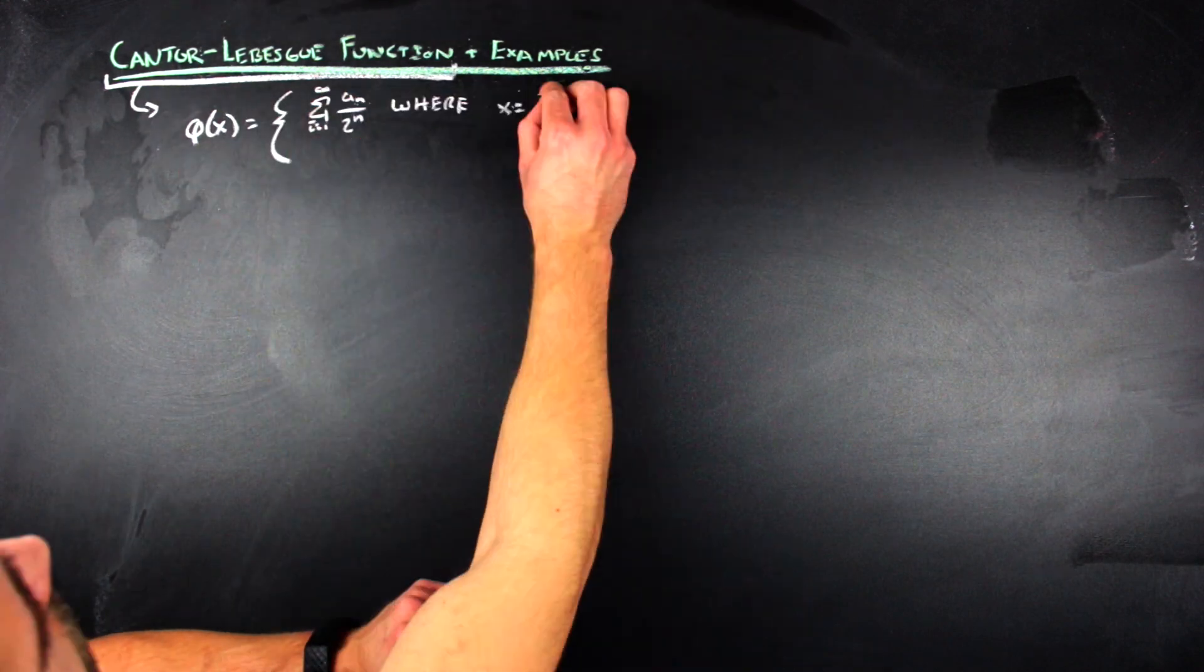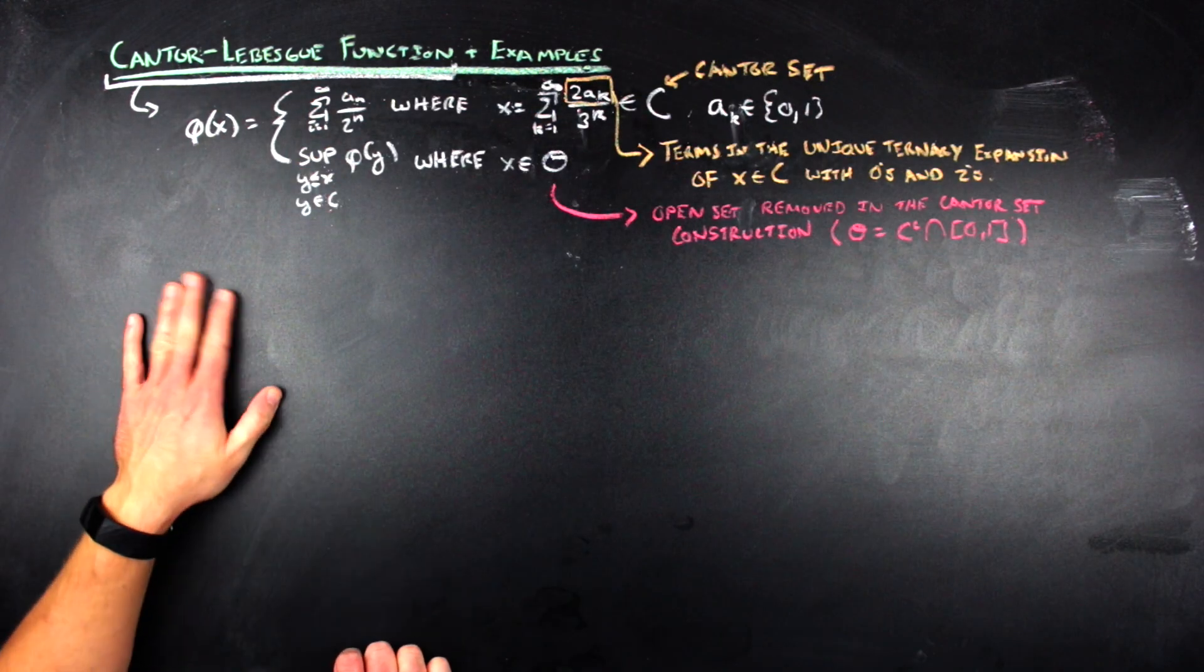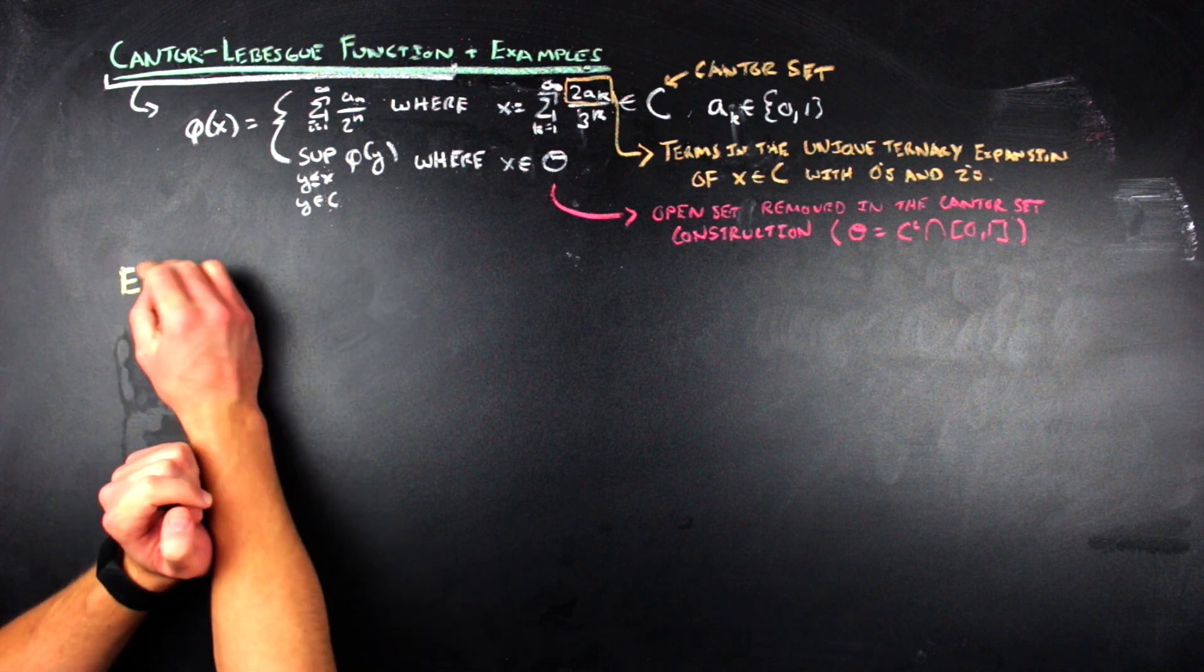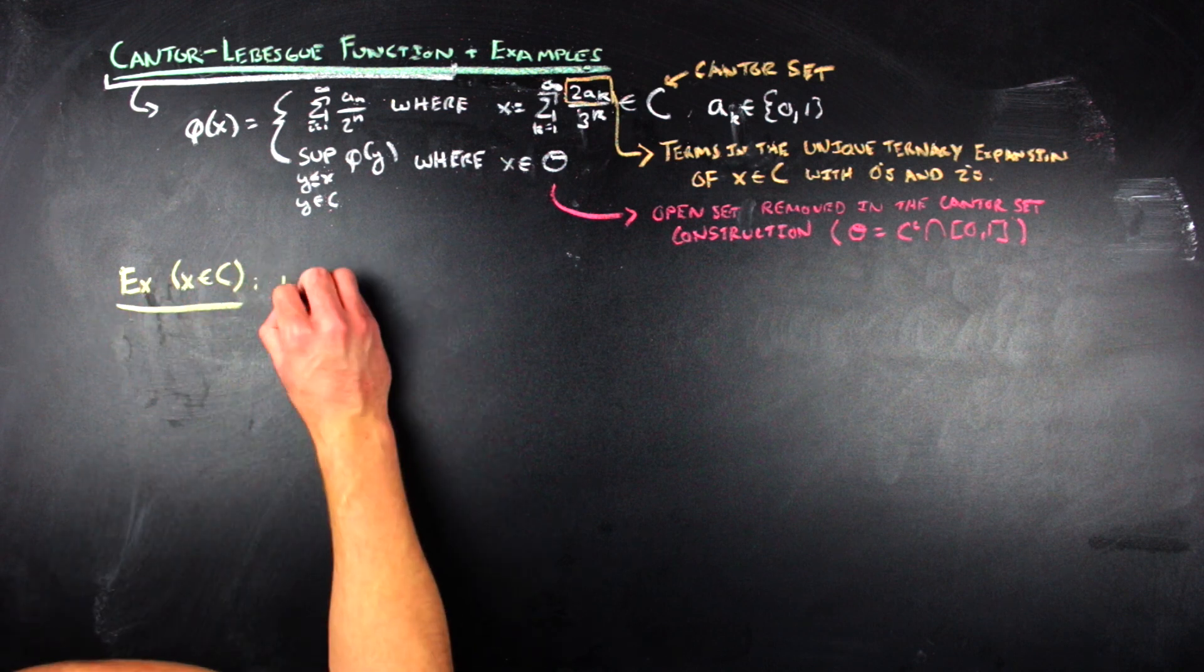Now that we have those prereqs in mind, we can start talking about the Cantor-Lebesgue function, which is a pretty messy function. This is what it looks like. Let's go ahead and do a few examples of what this function does to certain values of x. First, let's look at an example where our point is in the Cantor set.